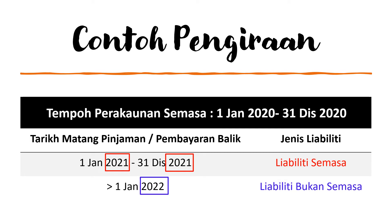Now let's see a very simple contoh pengiraan on how to categorize liability semasa and liability bukan semasa. The tempoh perakaunan semasa where you are requested to prepare the APUR and PKK is from 1 January 2020 till 31 December 2020. If the amount and tarikh pembayaran balik falls within the next immediate tempoh perakaunan — 1 January 2021 till 31 December 2021 — then the amount bayaran balik is categorized as liability semasa. Any payment beyond 1 January 2022 is categorized as liability bukan semasa.